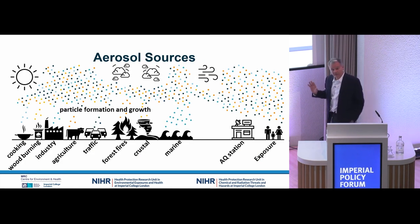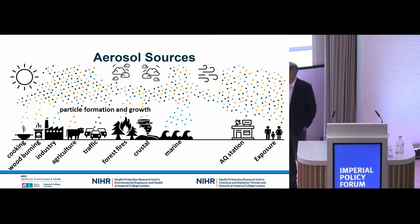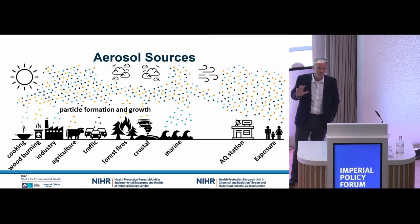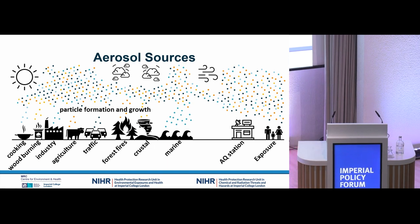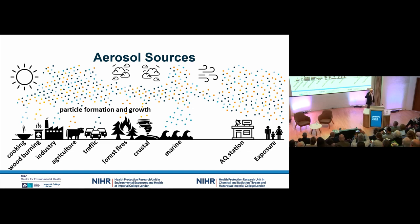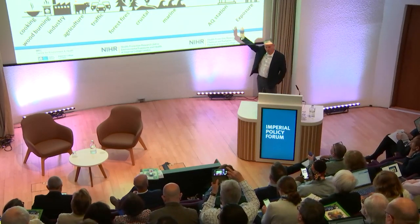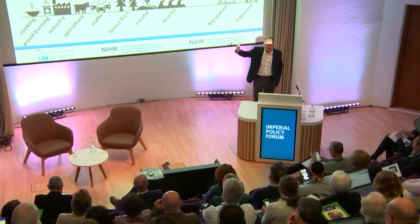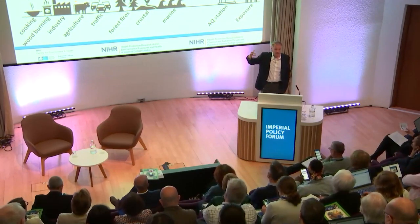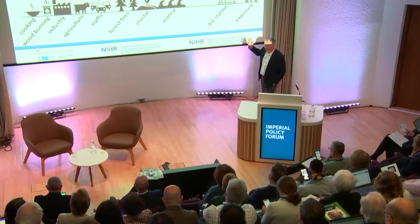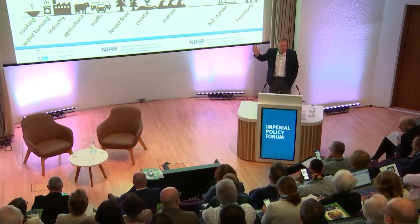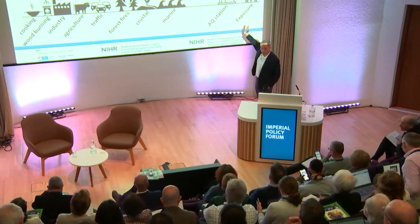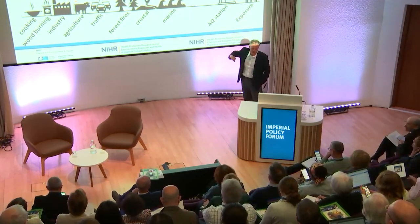I'm going to start with a cartoon to ease you in gently, and this is meant to display and explain the complexity of aerosol sources. Along the bottom we've got a range of aerosol sources, starting with anthropogenic sources and moving to more natural sources. From all of these sources, either gases or particles are released directly into the atmosphere, where particles are formed from gases and grow through condensation and nucleation. They're then transported to the population and to the air pollution measurement site.